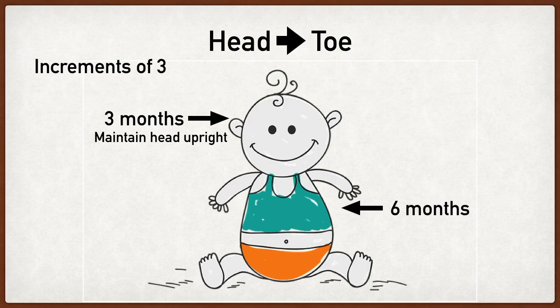Working our way down in increments of three, this is when the trunk starts to develop more stability and we're able to sit up in an upright position. First we're going to be sitting in a tripod position, and then we're going to be sitting up on our own, and all of this starts to occur right around six months.